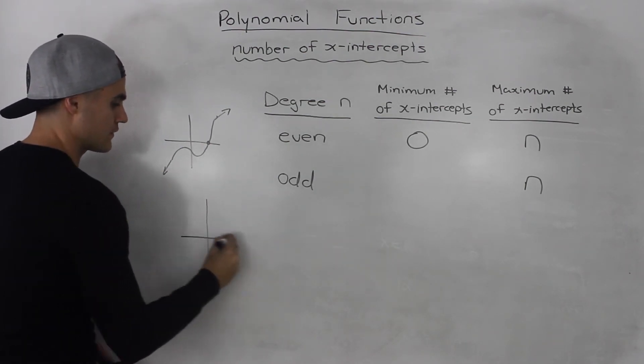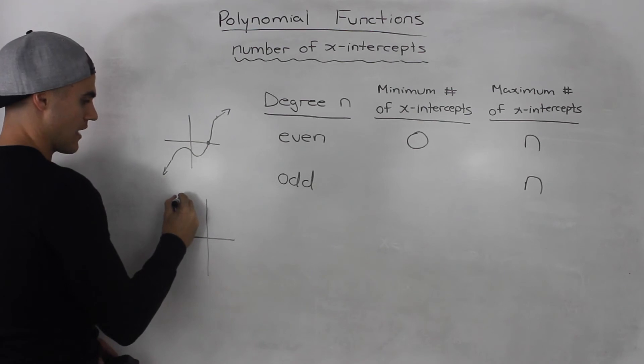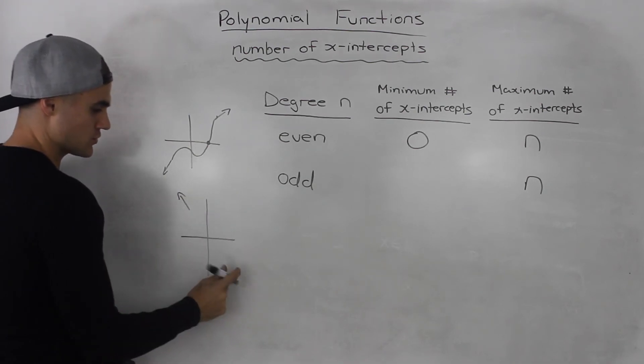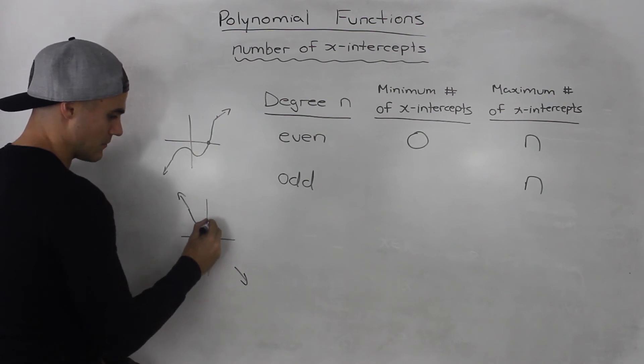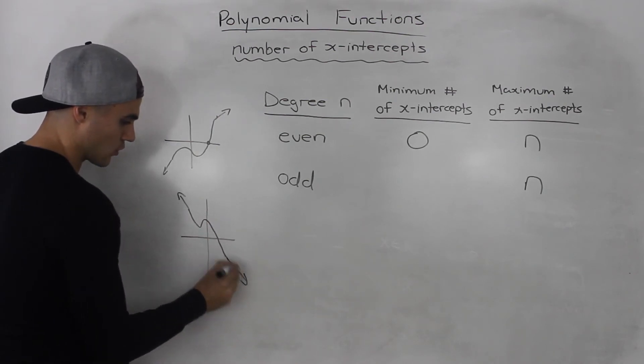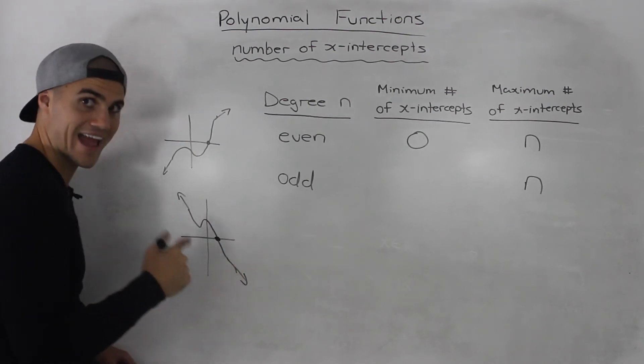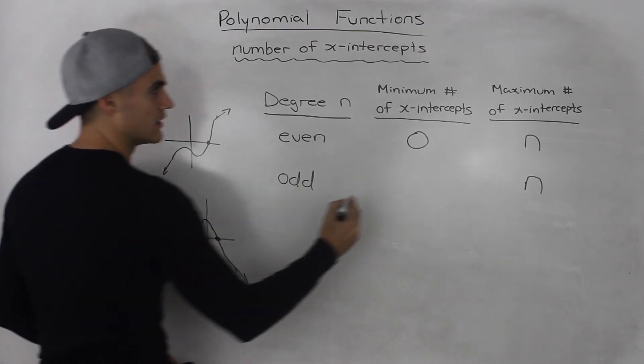Same thing if the leading coefficient is negative. The end behavior starts in quadrant 2 and then ends in quadrant 4. So we know at some point it's going to have to cross the x-axis at least once.